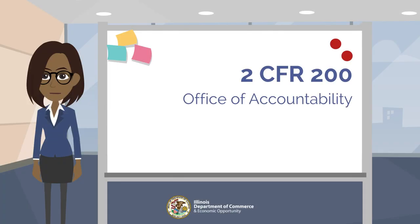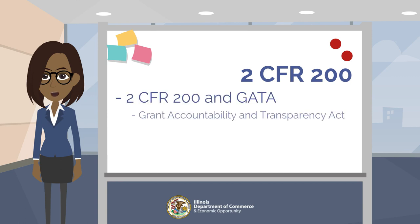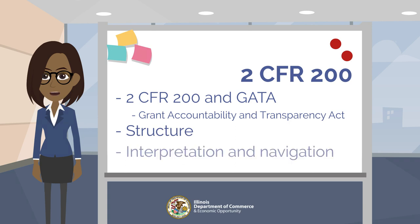Welcome to the Illinois Department of Commerce and Economic Opportunity Grantee Training. In this presentation, we will discuss tips for understanding and navigating 2CFR 200. We will define 2CFR 200 and its relationship to the Grant Accountability and Transparency Act, provide an overview of 2CFR 200 and review its structure, and go over tips on interpreting and navigating the electronic version of 2CFR 200.